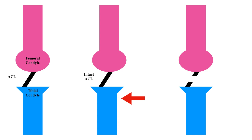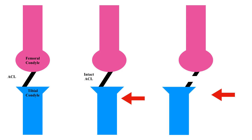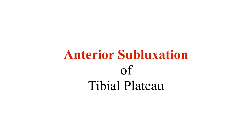In a similar sagittal view of the knee joint but with a ruptured anterior cruciate ligament, an anteriorly directed force to the tibia will result in anterior subluxation of the tibia because of the loss of restraint of the anterior cruciate ligament that is ruptured.